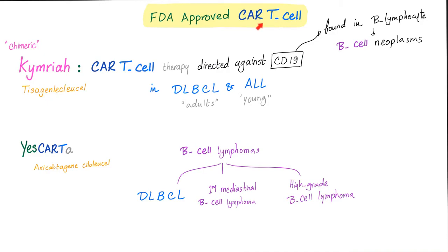Let's go to the real world — CAR T-cell therapy. We have Tisagenlecleucel, which came from chimeric, and this is directed against CD19. As you know, CD19, 20, and 21 are on the B lymphocyte. Therefore, they will attack the B cell cancer, such as diffuse large B cell lymphoma and ALL — acute lymphoblastic leukemia. CAR T-cell therapy targets B cell cancers: diffuse large B cell lymphoma, primary mediastinal B cell lymphoma, and high grade B cell lymphoma.